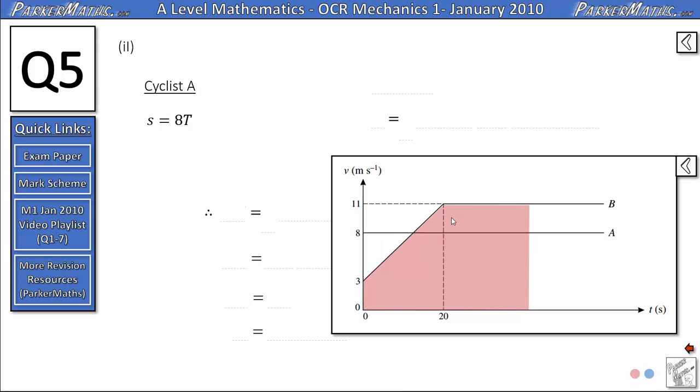For cyclist B the area is a little bit more complicated. So the area of this trapezium will be a half multiplied by the sum of the parallel sides. So that is 3 plus 11 multiplied by the height of the trapezium which is 20. And then we need to add on the area of this rectangle. So the height of the rectangle is 11 and for the other side we have to be quite careful. Remember the whole length from 0 to here is T but we don't want the bit from 0 to 20. So the length of this rectangle is T minus 20.